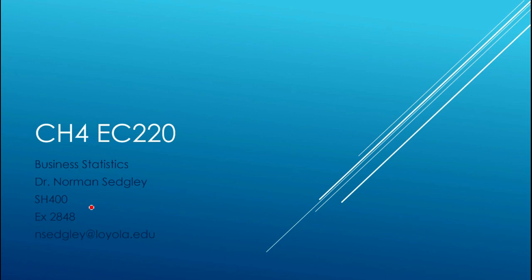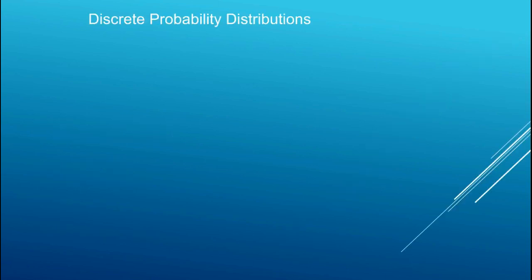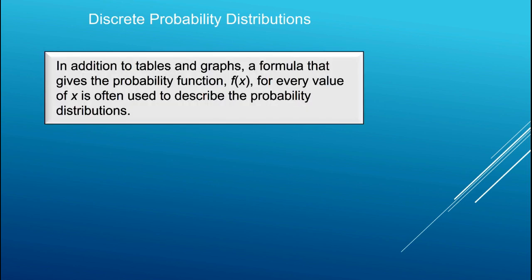Welcome to our second video lecture covering the material in Chapter 4. In this video, we're going to continue our discussion of discrete probability distributions. In the last video, we talked about empirical discrete probability distributions, where we relied on tables, graphs, and a frequency distribution to define f of x, or our probability function.